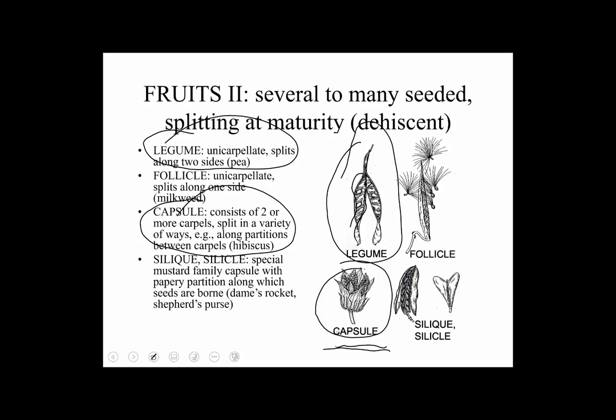A follicle is also from a single carpel, but instead of splitting along two sutures, it only splits along one. This is not a particularly common fruit type, but it's distinctive enough that when we identify plants we can focus in on it. It's especially well demonstrated in milkweeds.